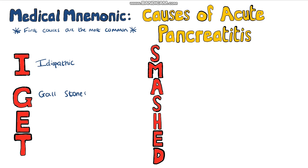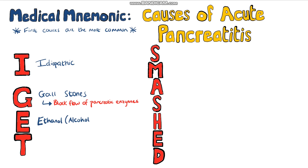G stands for gallstones, because the stones can block the flow of pancreatic enzymes into the duodenum. E is for ethanol, which represents alcohol use, and this is the most common cause of acute pancreatitis in the US.